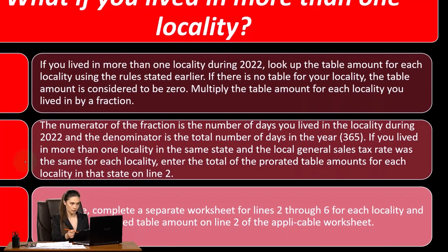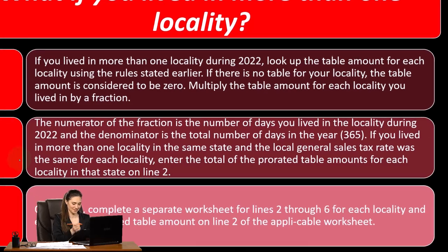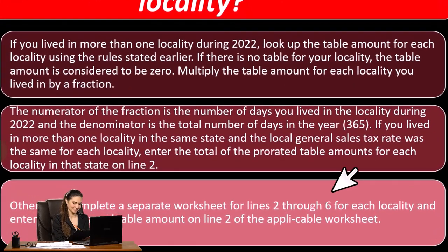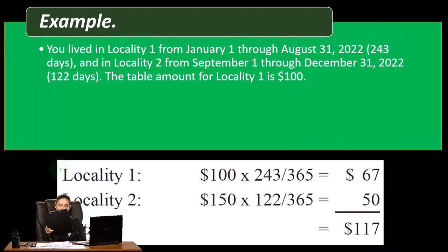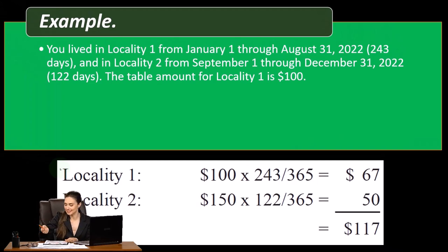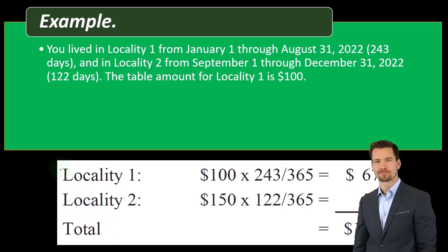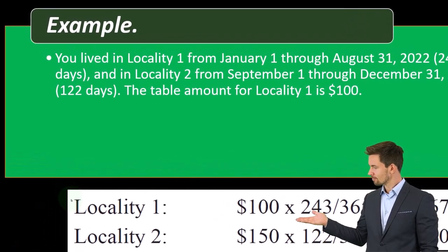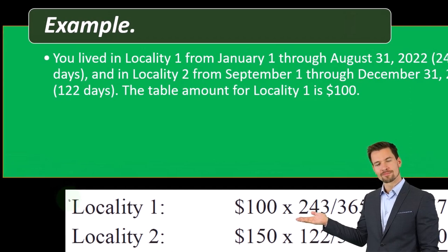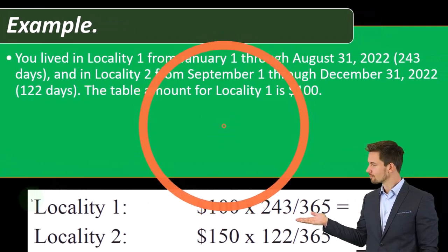Complete a separate worksheet for lines two through six for each locality and enter the prorated table amount on line two of the applicable worksheet. Let's take a look at an example. You lived in locality one from January 1st through August 31st, 2022, 243 days, and in locality two from September 1st through December 31st, 2022.